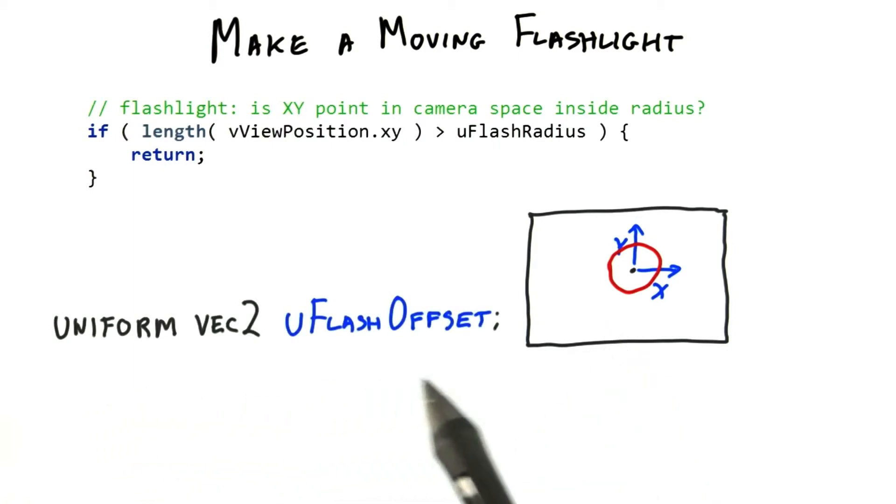I've added the uniform uFlash offset, a two-element vector that gives the center point for the flashlight. There are sliders hooked up to it, but the vector is not used in the fragment shader itself. That's your task.